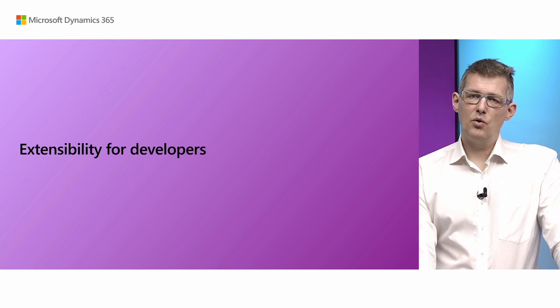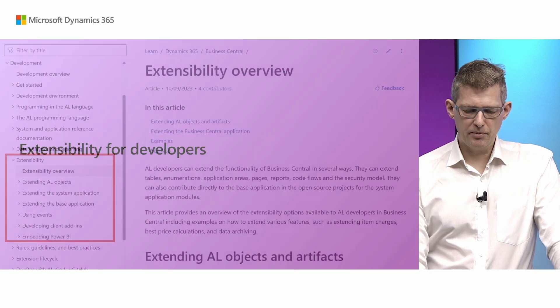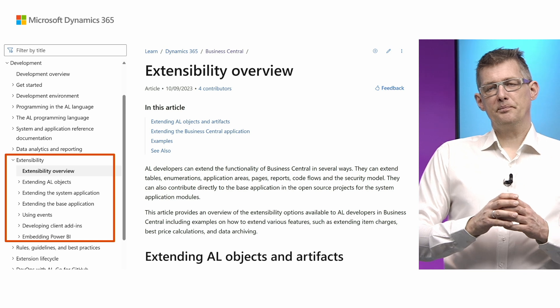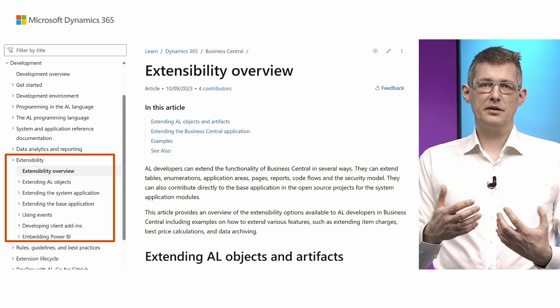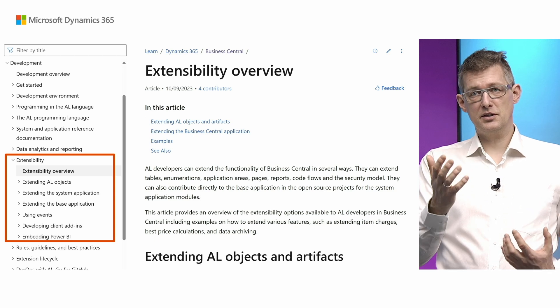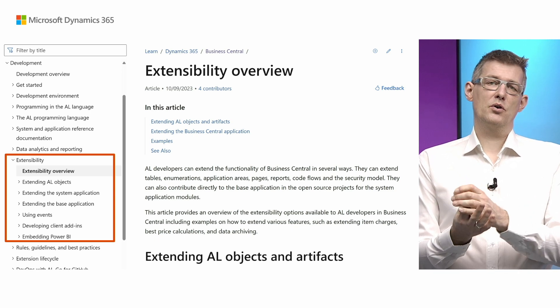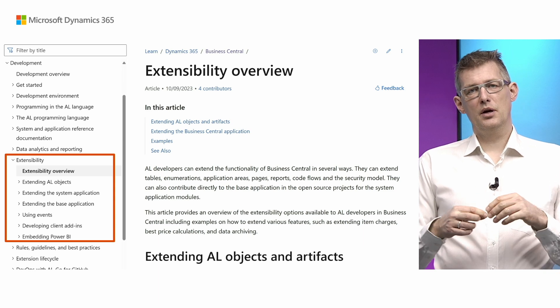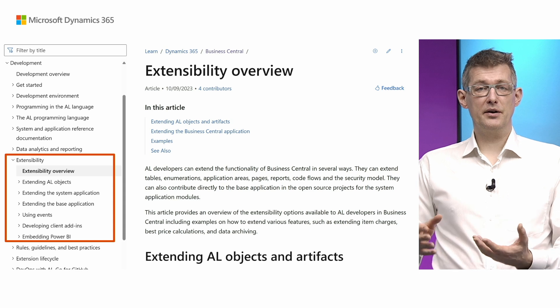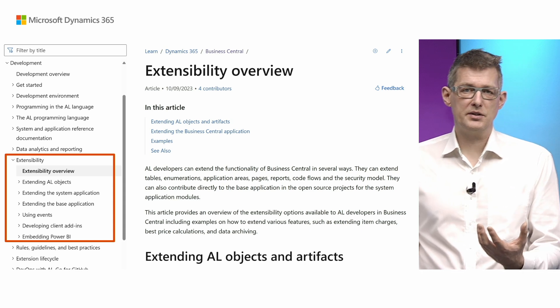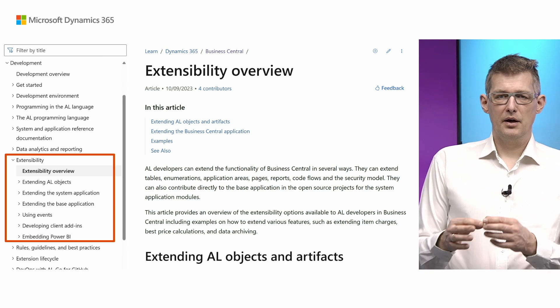Extensibility is not just about report extensions and so on. We added a new extensibility overview covering ways to extend in AL, but also thinking about extensibility as making changes to or suggesting changes to the system foundational layer — the system app or the base app. That's also a way to extend where everyone else gets your extension. Client extensions, using Power BI to extend — all of that is in the extensibility overview.